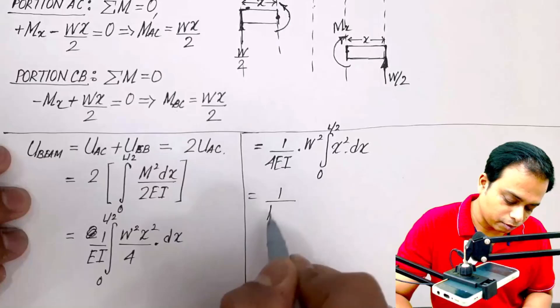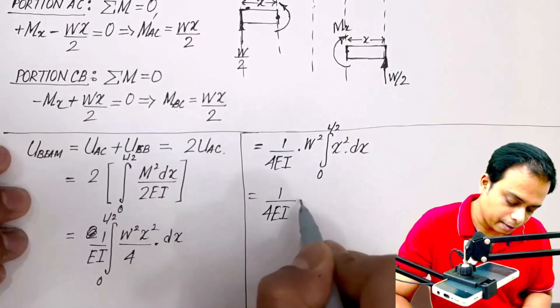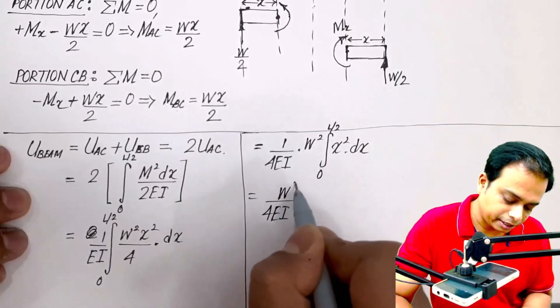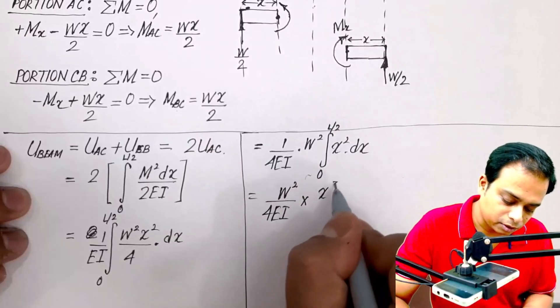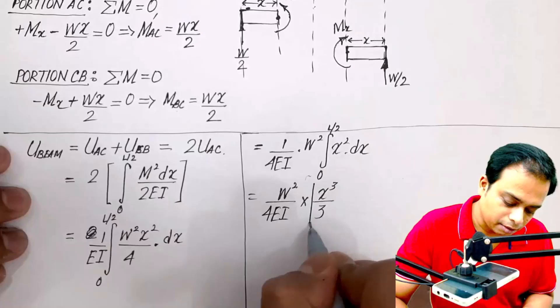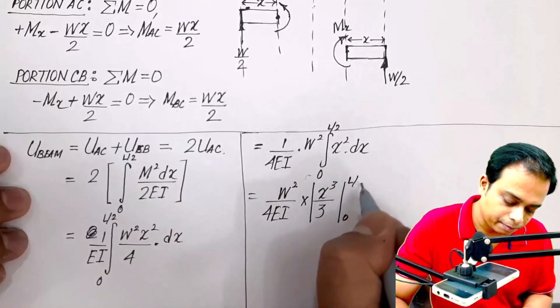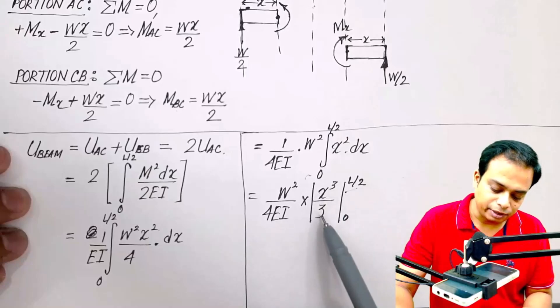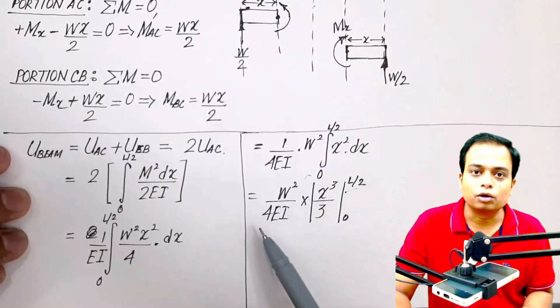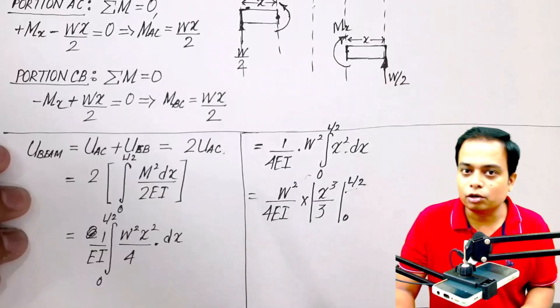Let me take this EI outside. Okay, and what is left is dx. So this is what you need to integrate. So it is going to be equal to 1 over 4 times of EI, and W squared integral of 0 to L by 2, x squared dx.